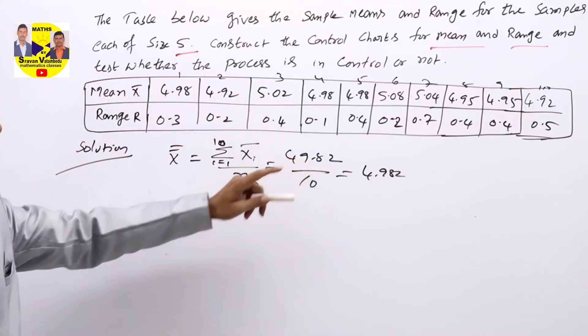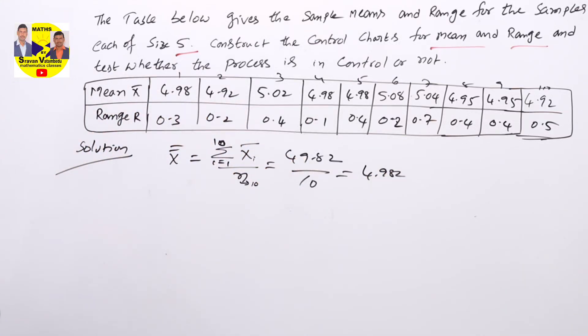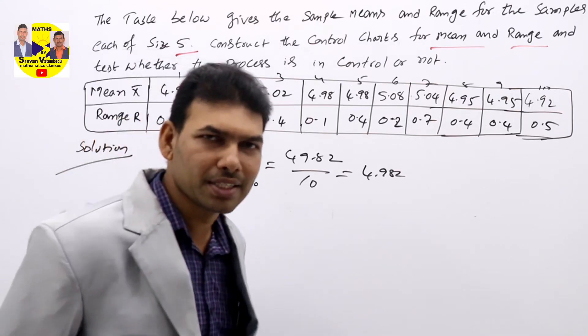If you divide, the decimal comes to you. 4.982 is X double bar.